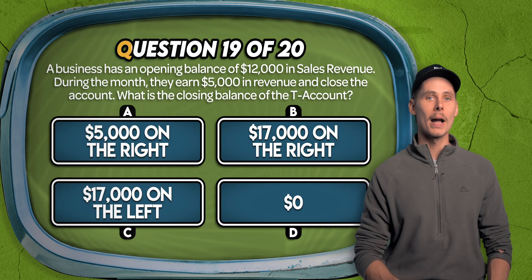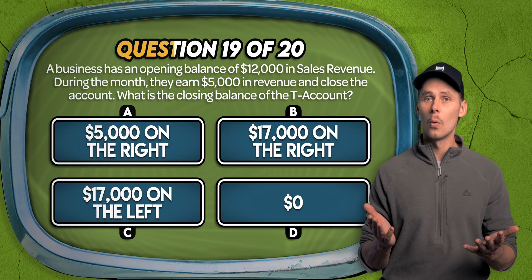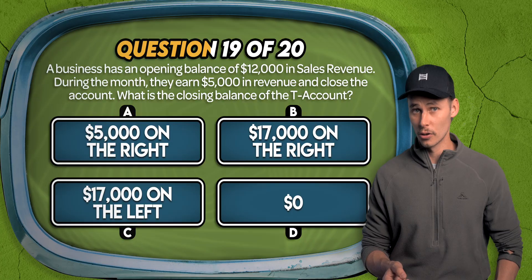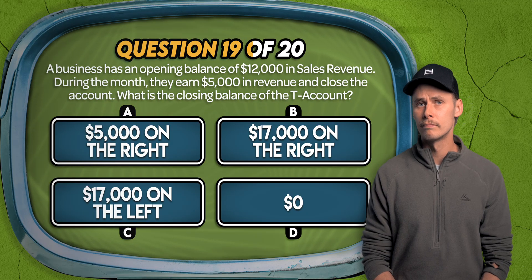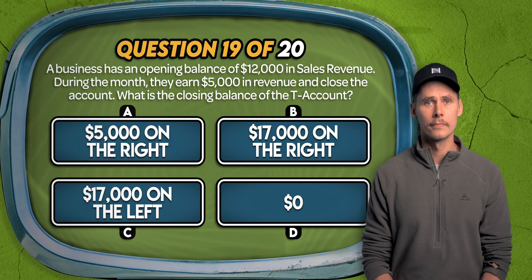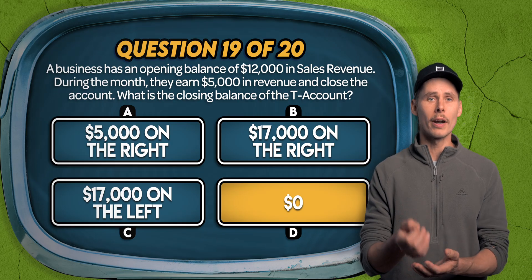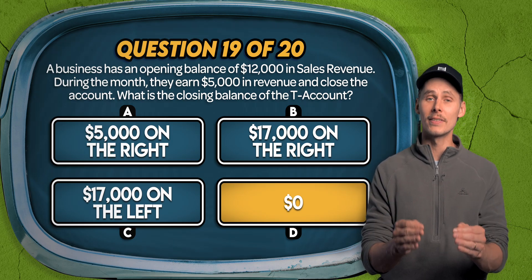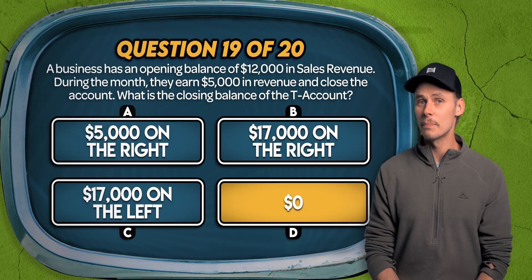Question 19. A business has an opening balance of $12,000 in sales revenue. During the month, they earn $5,000 in revenue and close the account. What's the closing balance? Is it $5,000 on the right, $17,000 on the right, $17,000 on the left, or $0? The answer is D. This is a bit of a trick question. After earning the $5,000, the total credit balance becomes $17,000. But when the account is closed, it's debited by $17,000 — the balance is transferred to the income summary account — leaving sales revenue with a closing balance of $0.